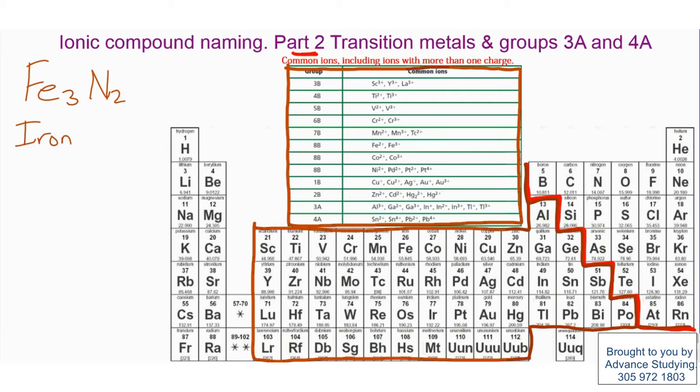It is iron. But which one? Iron 2. And we specify it by doing this: Iron 2. And in this case, it is nitride. What we did just now is specify which ion it is of iron. Let's do another one.